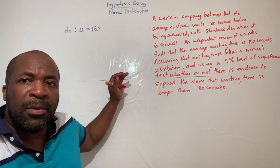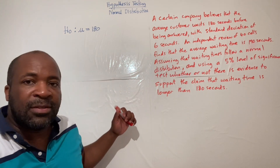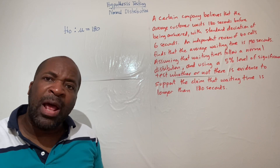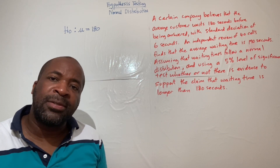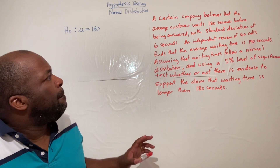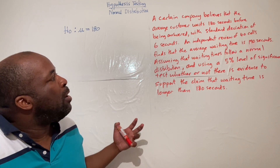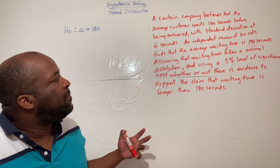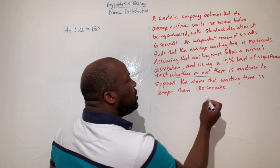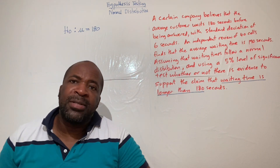We know the mean, standard deviation, and that the data follow a normal distribution. An independent reviewer of 40 calls finds the average waiting time is 190 seconds. This allows us to form the alternative hypothesis — what we would accept if we rejected the original claim.